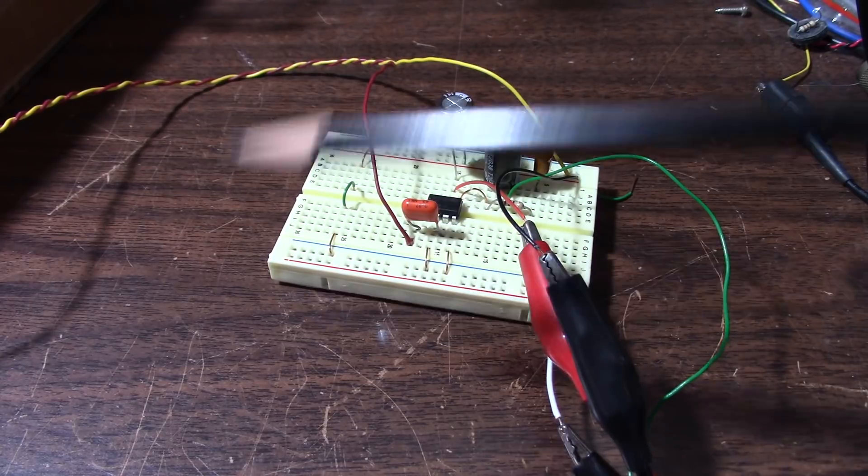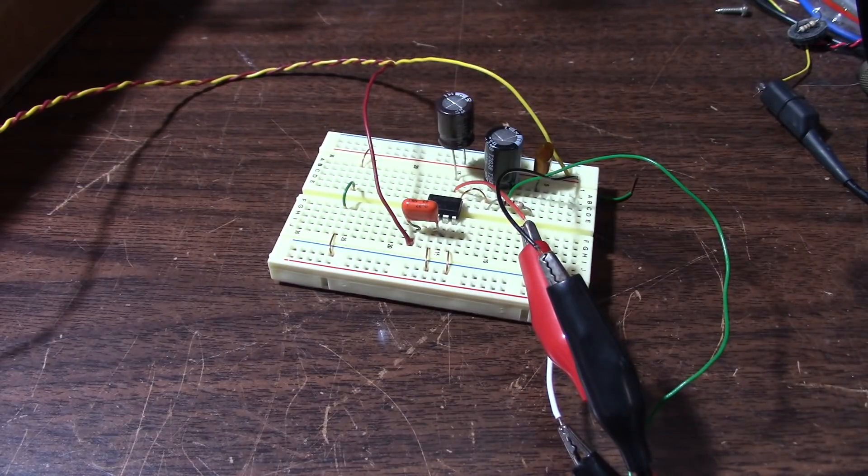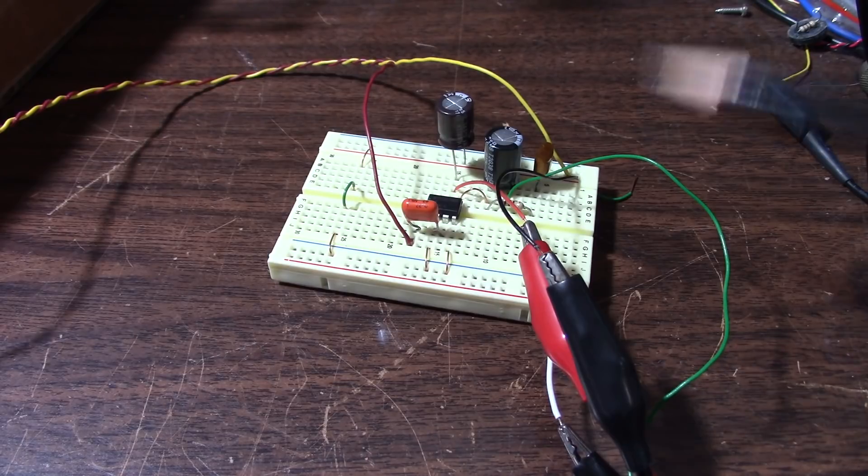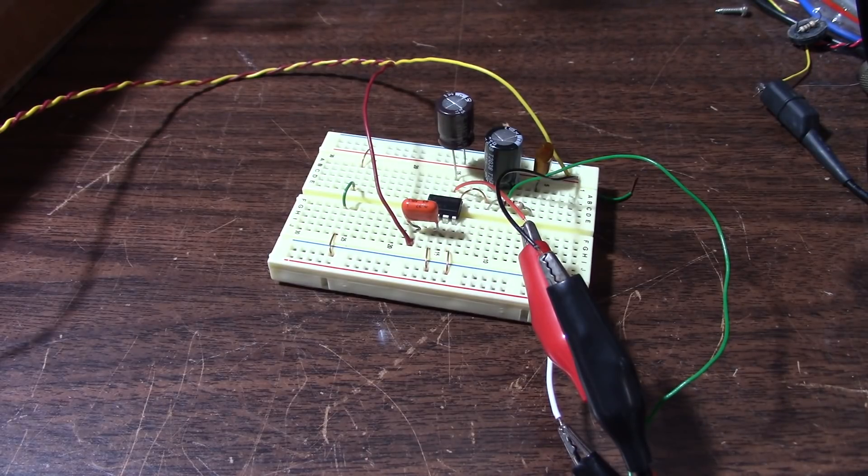I was getting some ringing on the square waves, as I recall, and I was thinking, well, we have a problem here. But when I scoped across the supply rails feeding the current source, well, that ring was on the power supply rails. So when I fixed that, it behaved fine. There was no problem.